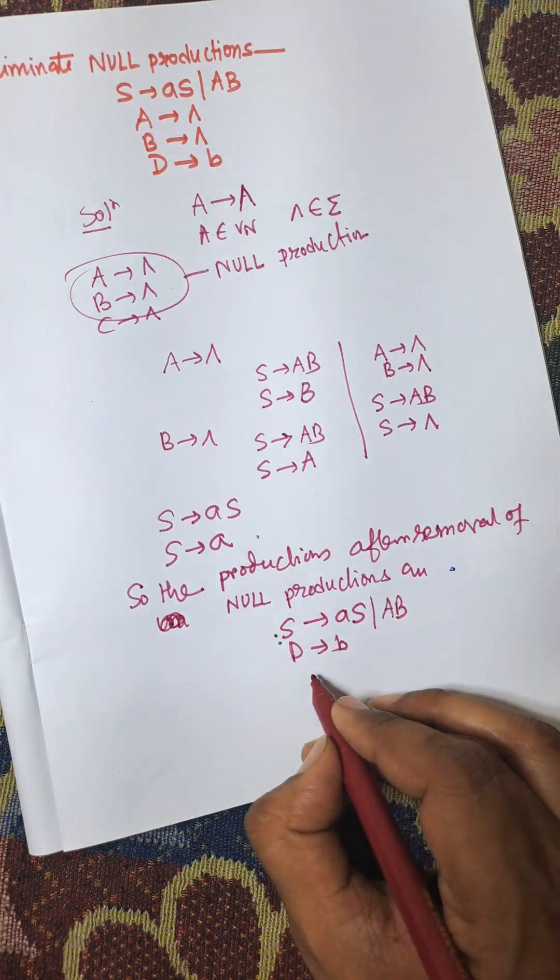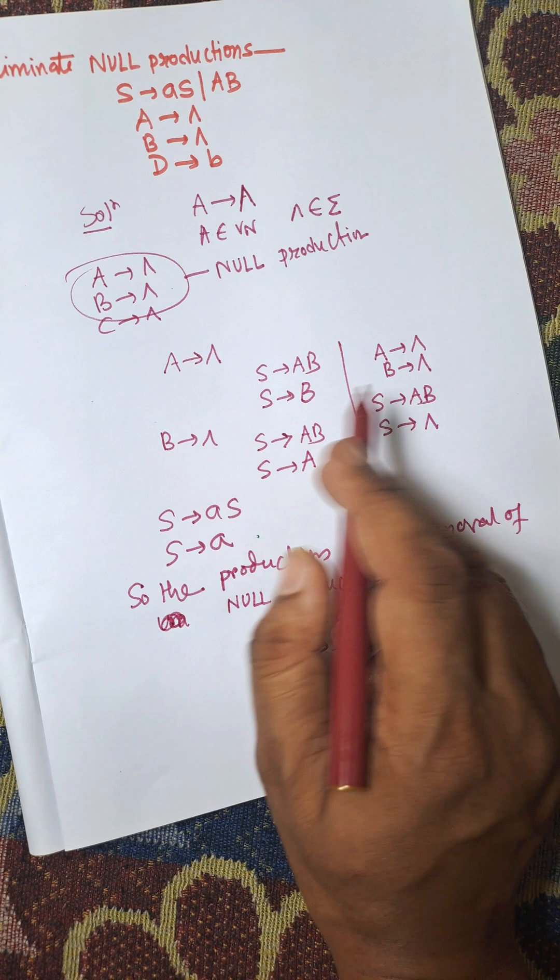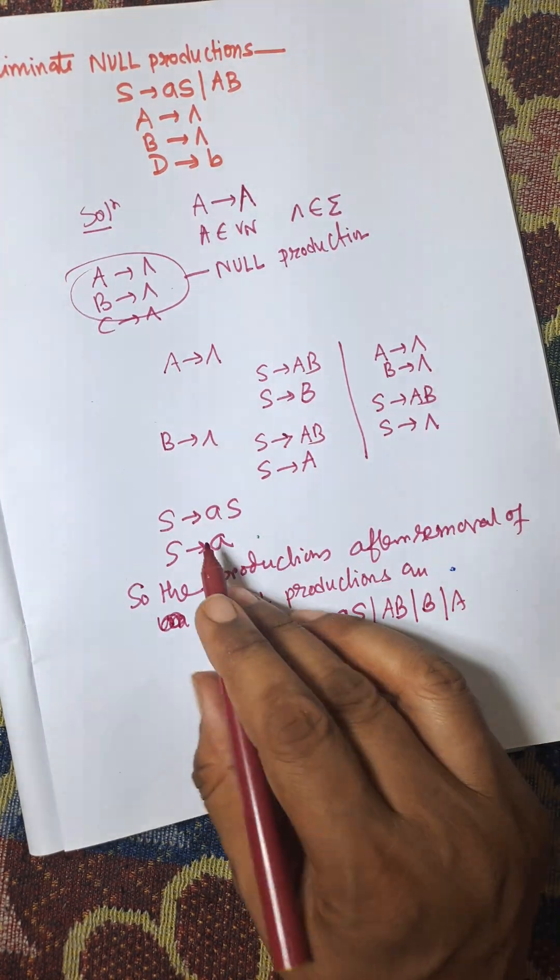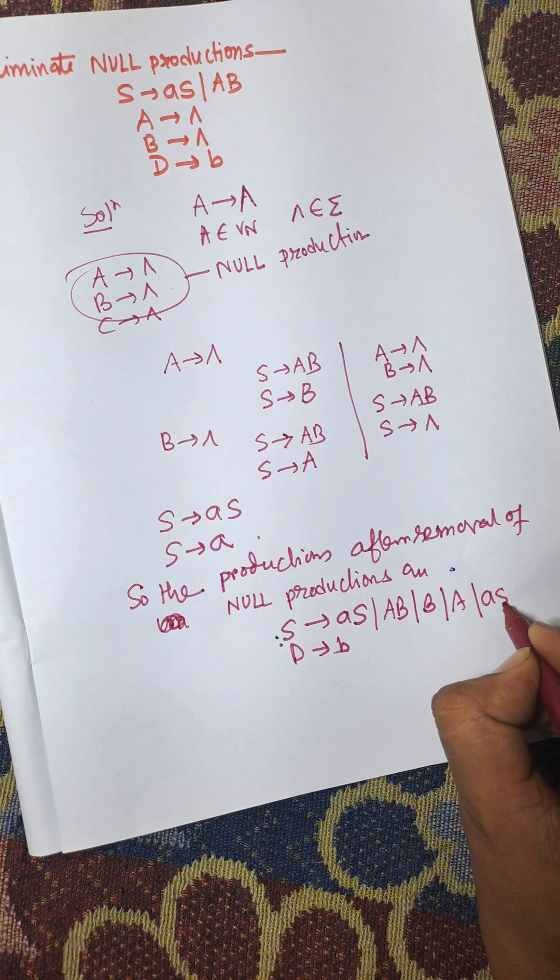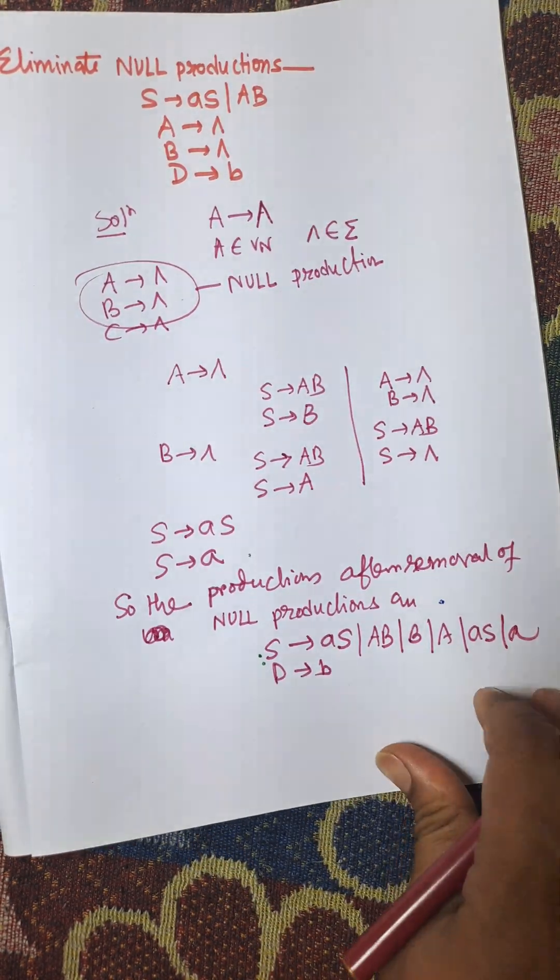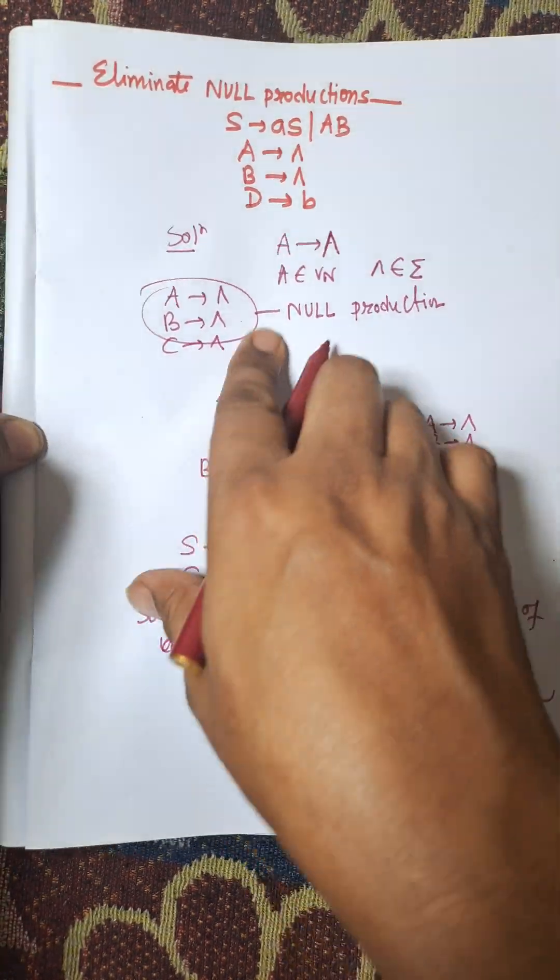Now S to B is another production we will get when putting the value of A to empty. We will get S to B, S to A. So these are the productions we will achieve after removal of null productions from the given question.